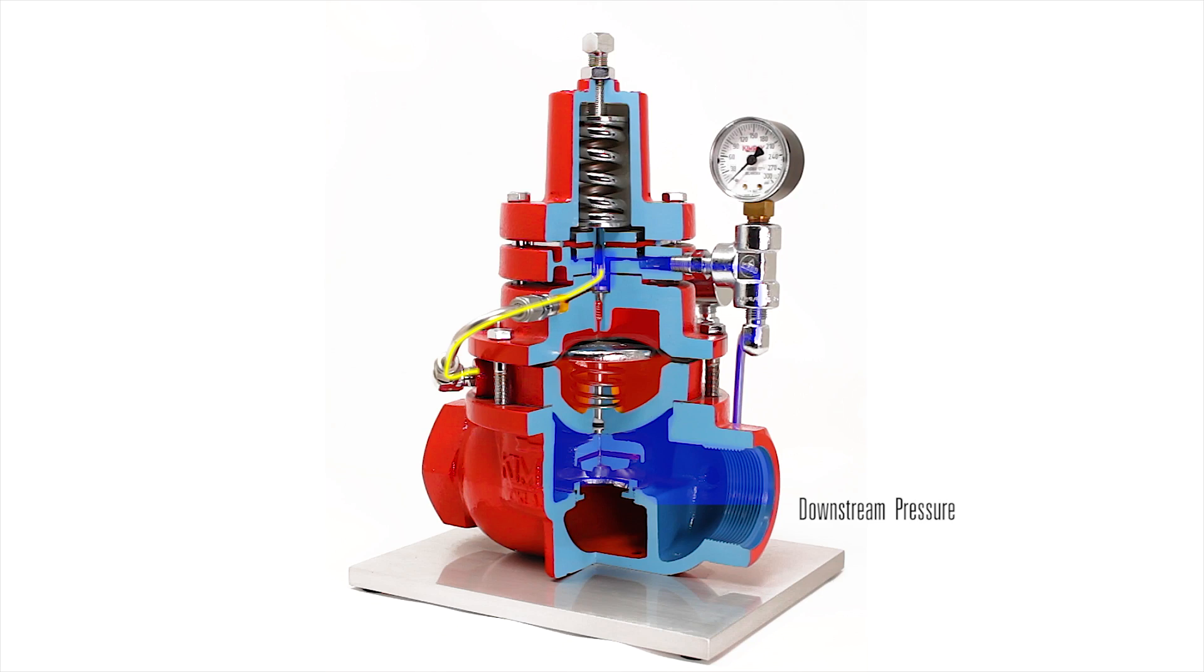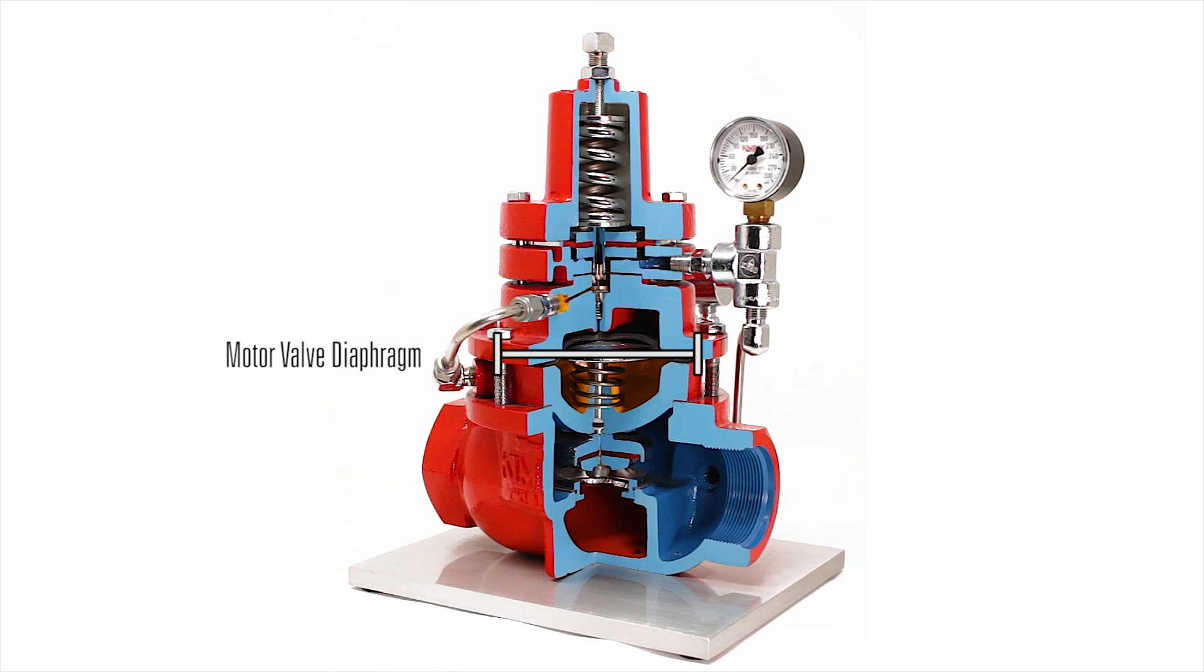A constant downstream pressure is then set. Because the diaphragm has a larger surface area than the plunger, the same pressure can hold the valve in a closed position when needed.